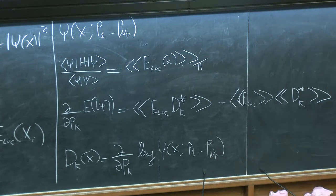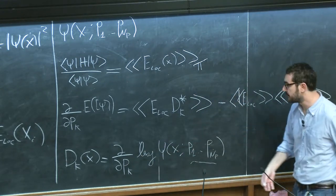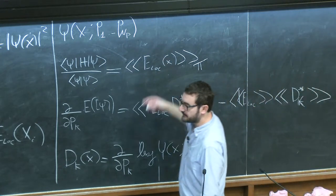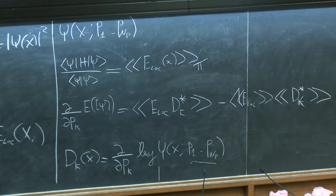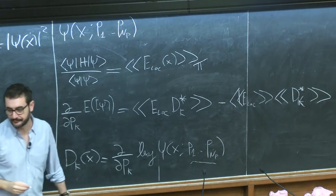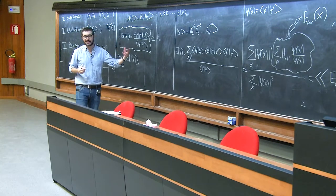If I have some form for my variational wave function depending on parameters, I can take the derivative of log ψ to get D_k. The local energy can also typically be computed efficiently. So by sampling configurations distributed according to π, I can estimate both the expectation value of the Hamiltonian and its gradient — one of the fundamental ingredients needed to transform quantum mechanics into machine learning.